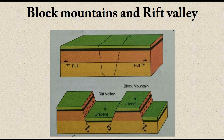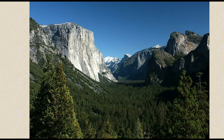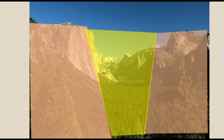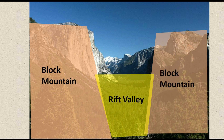Here is a photo showing a block mountain and a rift valley in the middle. On the left and right are block mountains, and the middle region is the one that moved downwards — that is the rift valley. Initially the rock strata was flat, but due to tension the middle layer went down, creating a valley on either side of which are the block mountains.